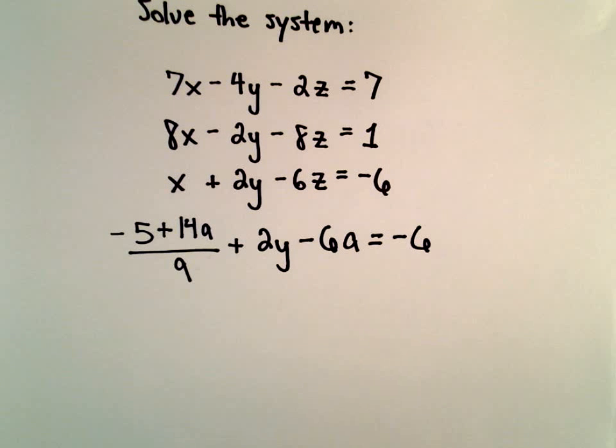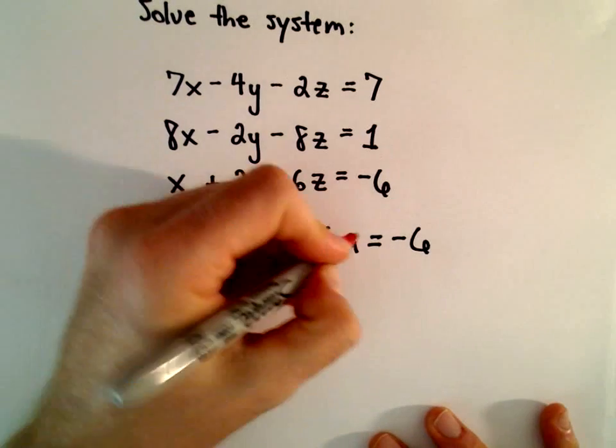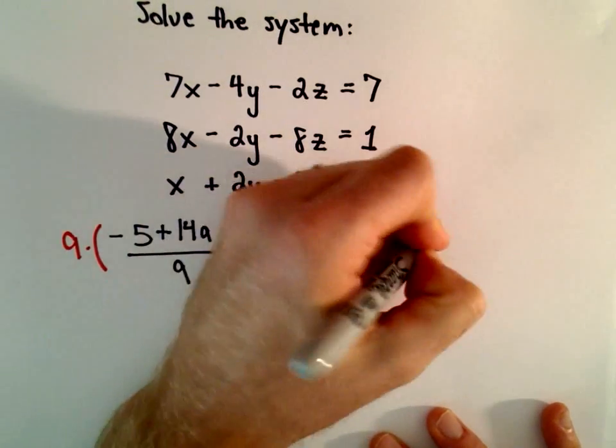Okay, so I think what I'm going to do here, just to get rid of the fraction, is I'm going to multiply both sides by 9.